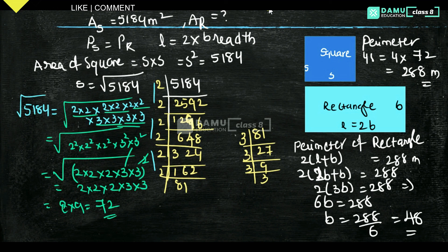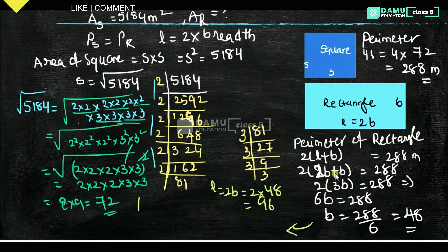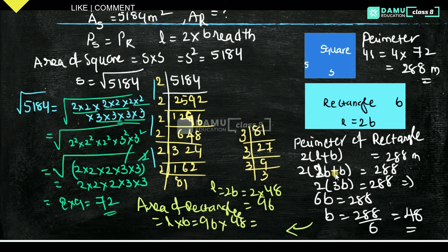So now calculate the area of the rectangle. Length L equals 2B equals 2 into 48 equals 96. Area of rectangle equals L into B, which is 96 into 48, giving 4608 square metres. That is the value. Thanks for watching. Please subscribe.